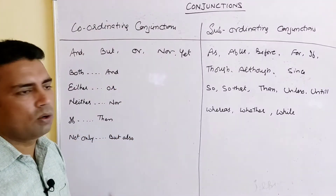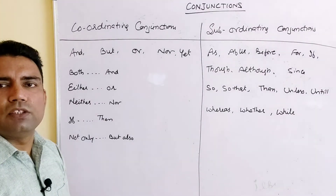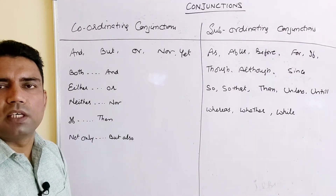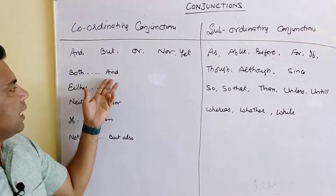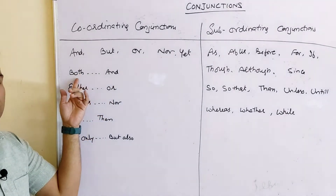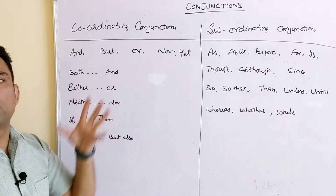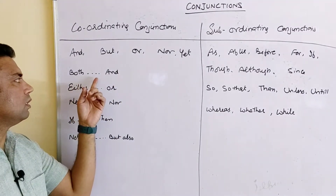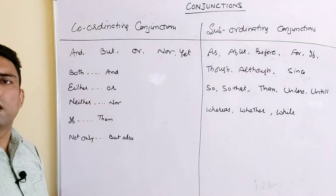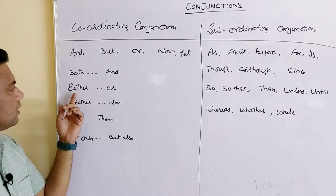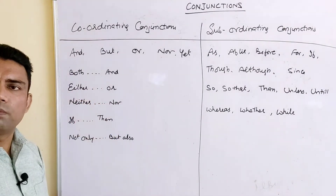'Yet' is used to show that results are quite different from what was expected. For example, 'I went to this school yet I was unable to attend the class.' 'Both...and' is used when referring to two things together — 'Both Ram and Sham are good boys,' 'both yellow and green colors are my favorite.' Next is 'either...or' — 'Either Ram or Sham will help you.'